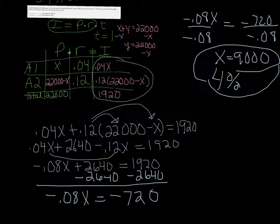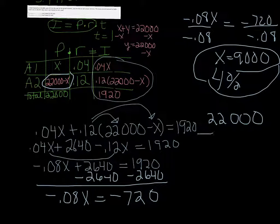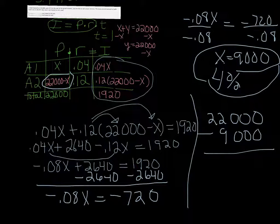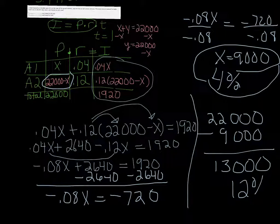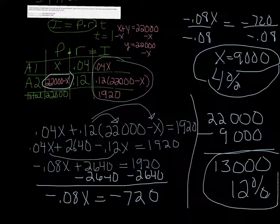To get the other one, the 12%, I'm going to circle it here in blue. Go back to that 22,000 minus X. That was the amount in the other account. So that would be 22,000 minus 9,000 is 13,000. So this is the one at 12%. So those are your two answers. I hope that helps.